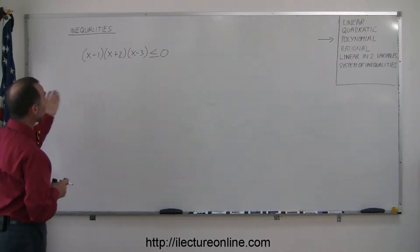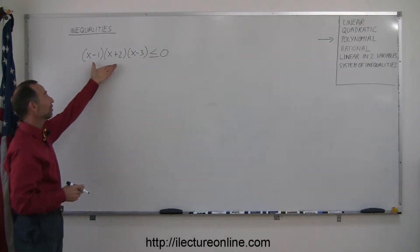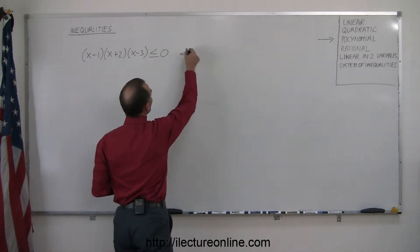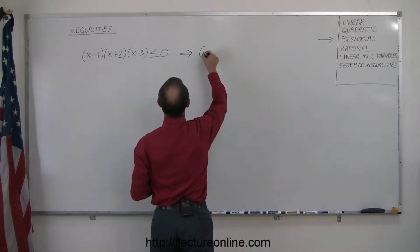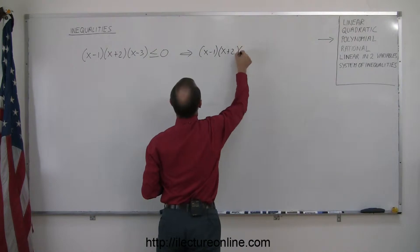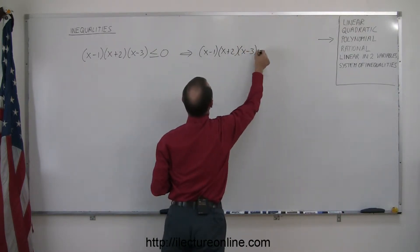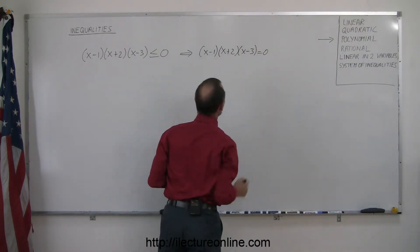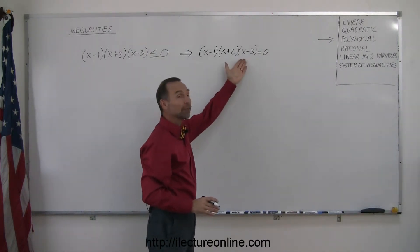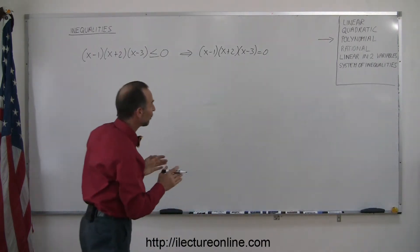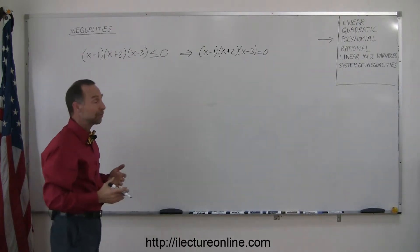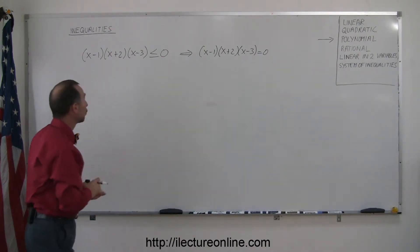The next stage, since you already have this in factored form, is to write the equivalent equation. So this would be (x minus 1)(x plus 2)(x minus 3) equals 0. We do that because the solutions we get from solving this are the critical points that delineate all the various regions that will offer us a solution to that inequality.